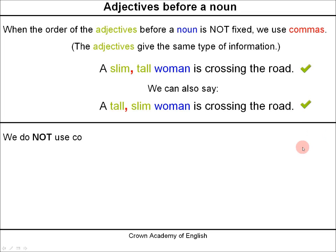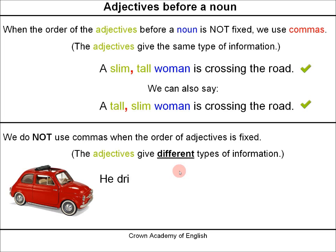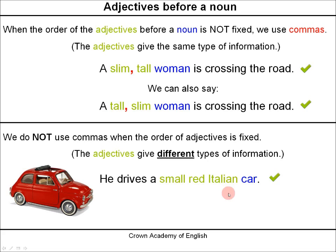However, we do not use commas when the order of adjectives is fixed. The order is fixed when the adjectives give different types of information. Example: 'He drives a small red Italian car.' We do not use commas because the position of these adjectives is fixed — they give different types of information: size, color, and nationality. So using commas here would be wrong.